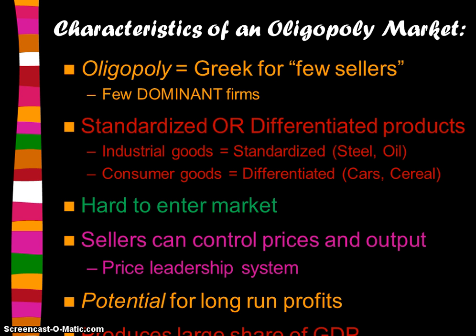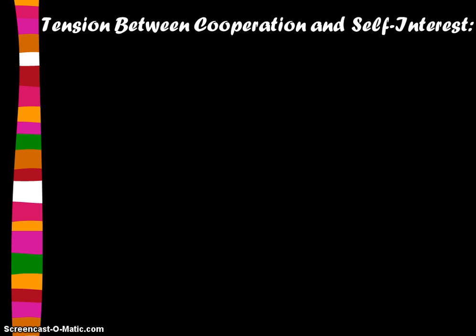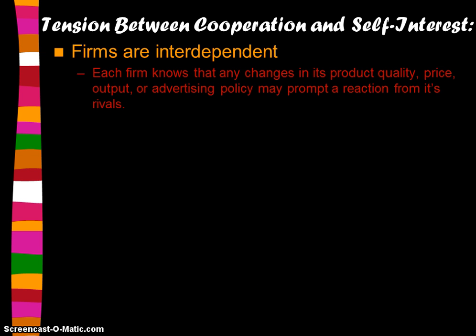Oligopolistic markets produce the largest share of the GDP in our country, so the majority of output is in oligopoly markets. In oligopoly, there's tension between cooperation and self-interest. The firms are what we call interdependent — each firm knows that any changes in its product quality, price, output, or advertising policy may prompt a reaction from its rivals.